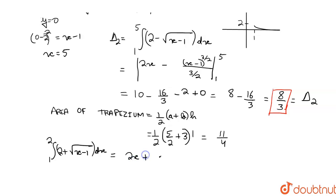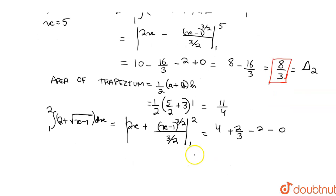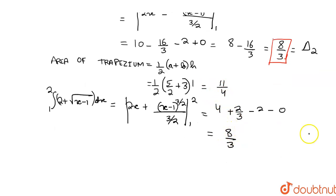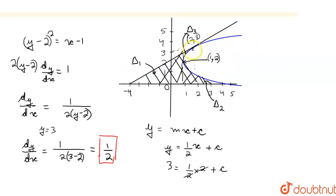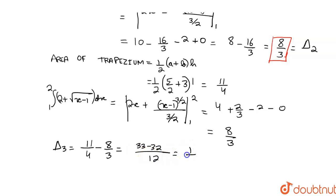Evaluating Delta 2: we get [x + (x−1)^(3/2) / (3/2)] from 1 to 2, which gives 8/3. Then for Delta 3 we get 11/4 − 8/3 = (33 − 32)/12 = 1/12.